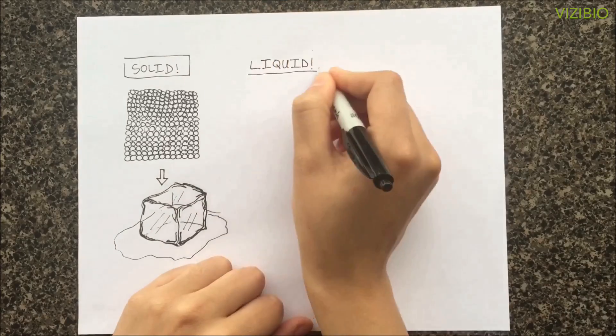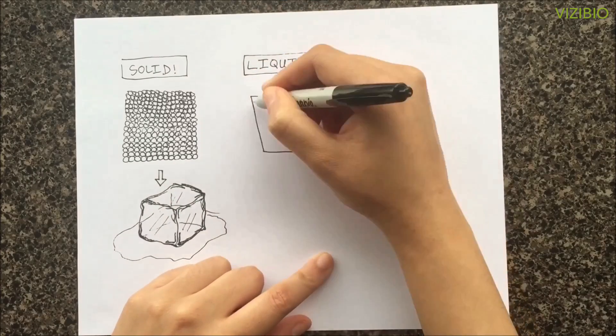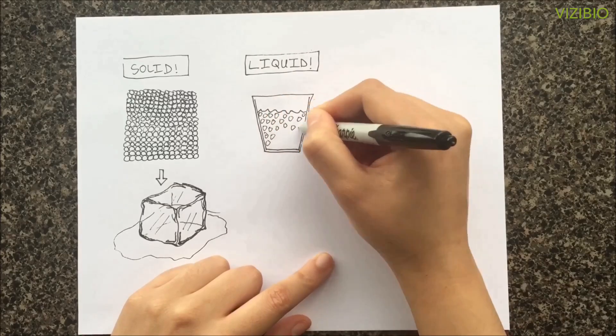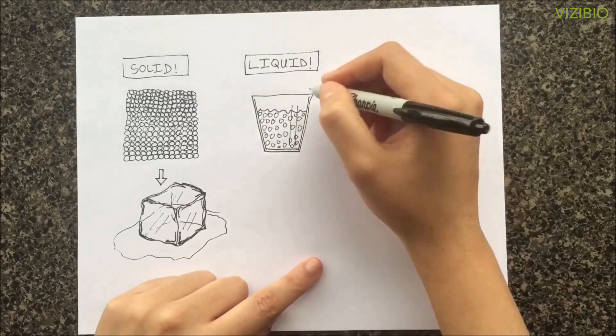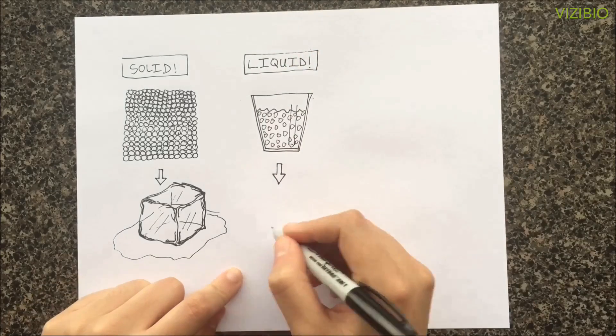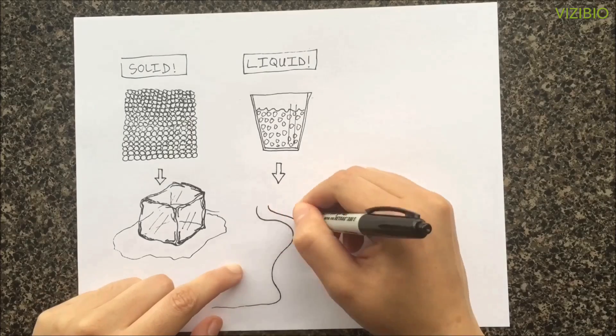Liquids, on the other hand, act differently than solids. Instead of having a fixed shape, they're able to move around freely in their containers. This is because the particles of liquids are not as tightly packed together as solids.